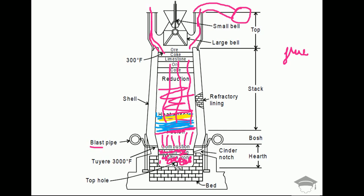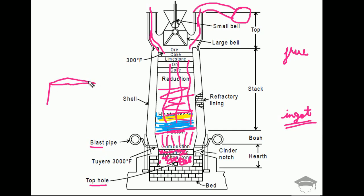We have a tap hole at the bottom. We open this tap hole periodically — because of gravity, the molten iron automatically flows out once the hole is opened. This molten pig iron is collected and cast in the form of ingots. In metallurgy, a block of pig iron is correctly called an ingot — cuboid-shaped pieces of pig iron.